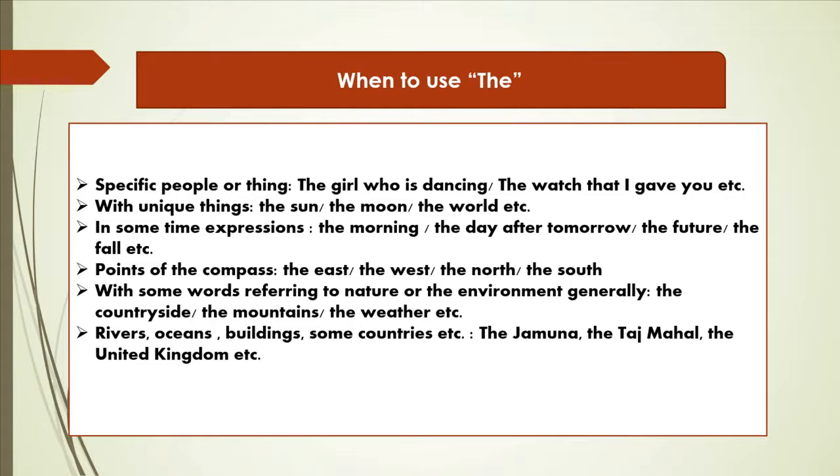For example, the girl who is dancing, the watch that I gave you, etc. Another one, with unique things, for example the sun, the moon. These are unique things, these are one type of thing, that's why we are using the before these nouns. Another one, in some time expression, for example the morning, the day after tomorrow, the future, the past, etc.